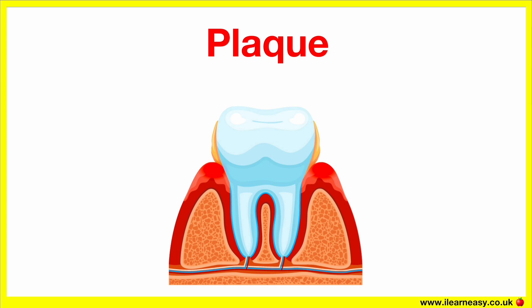The plaque often builds up along the gum line, between teeth, on molars and around brackets, crowns or fillings. Plaque untreated can lead to cavities, gingivitis, or it can harden into tartar.